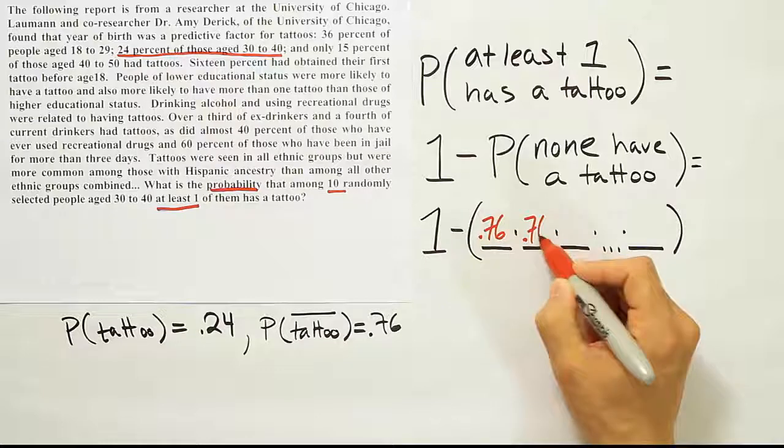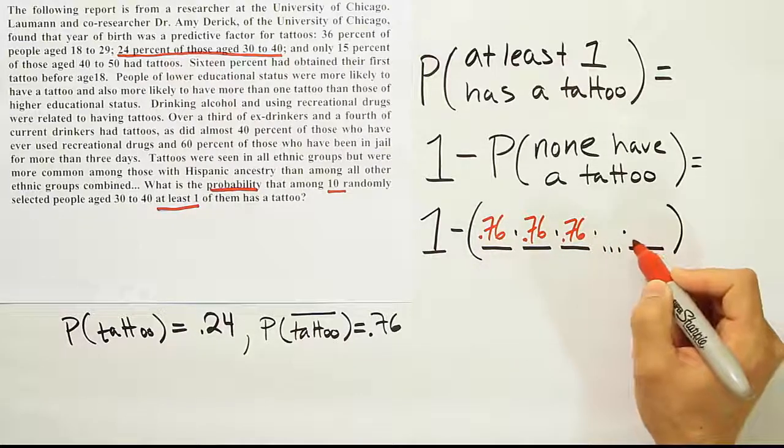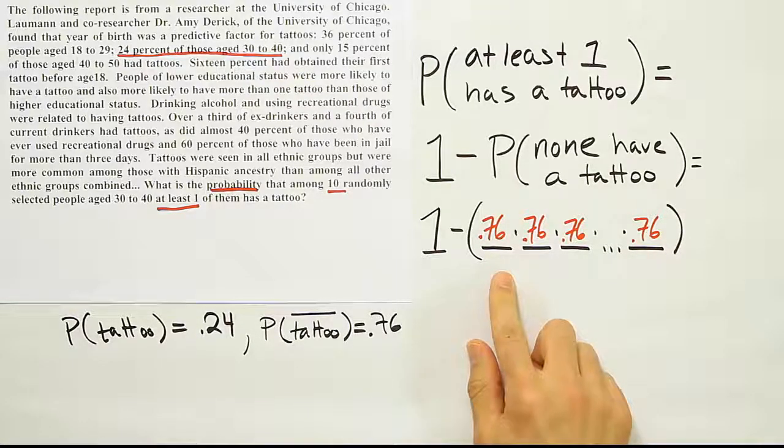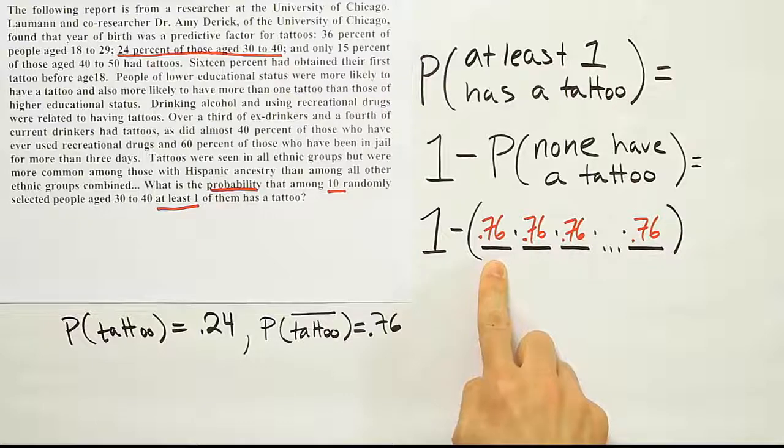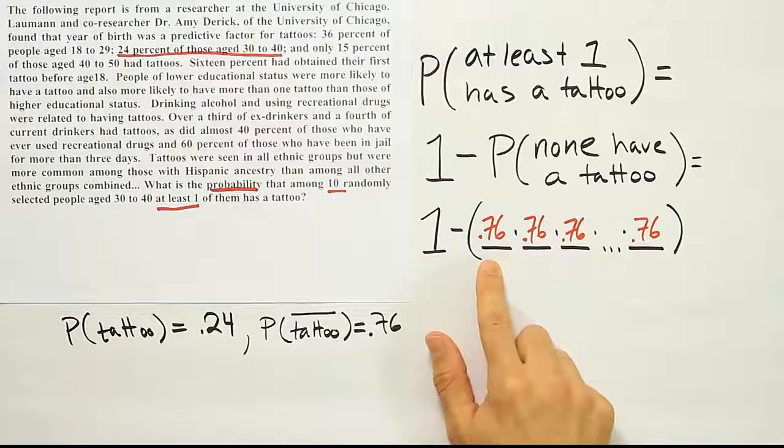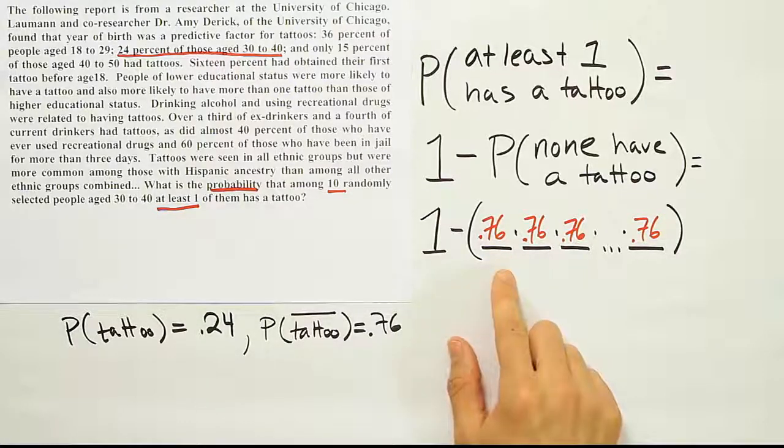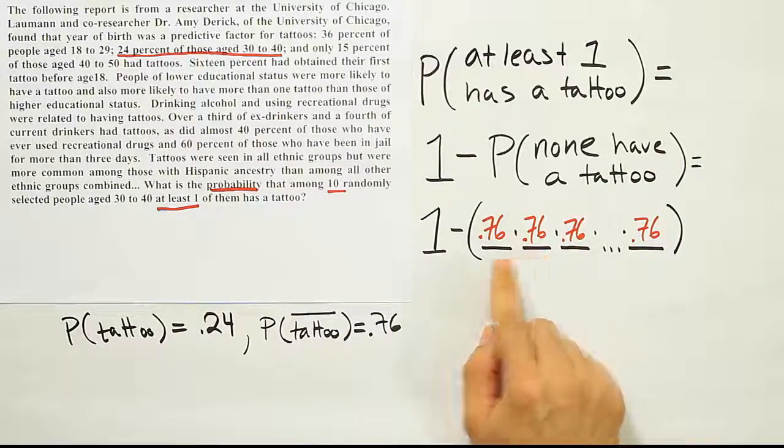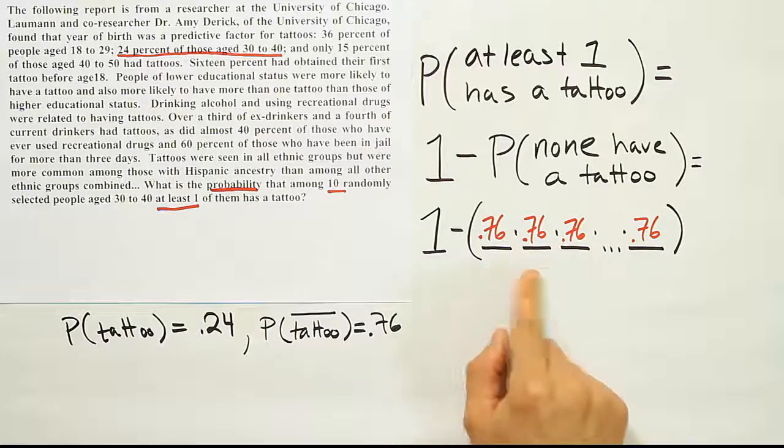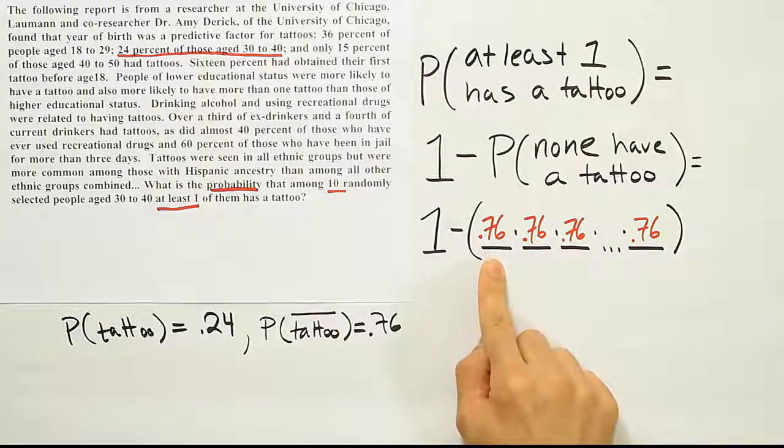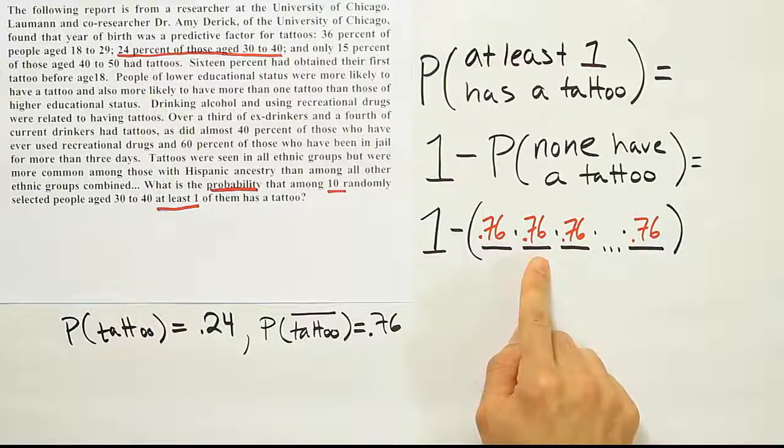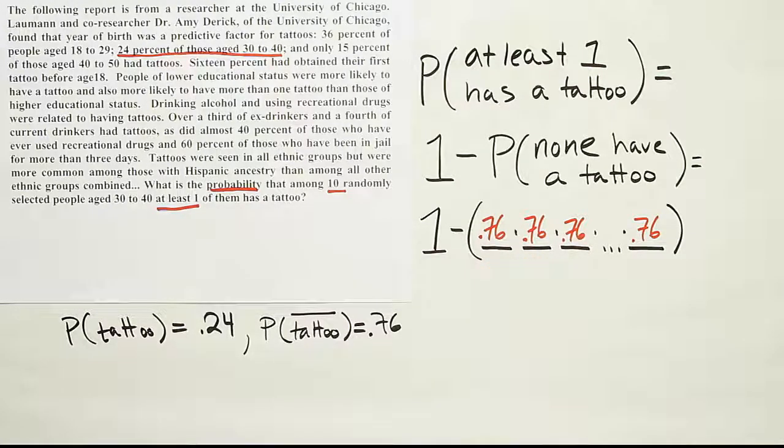So it will be the same probability for the next person and the next person dot dot dot for the next person. Again, we're assuming that it's constant here because we're assuming that these events are independent. If I randomly grab one person from the population somewhere in the world in this age bracket, the probability that they don't have a tattoo is 76%. If I put that person back in, I randomly grab somebody else from the population, this person here should not be affected by whatever happened on that first trial there. So they should be independent. In other words, one guy's tattoo from another part of the world is not going to affect the probability that the next person I take has a tattoo, assuming that there's no direct connection between those two individuals.